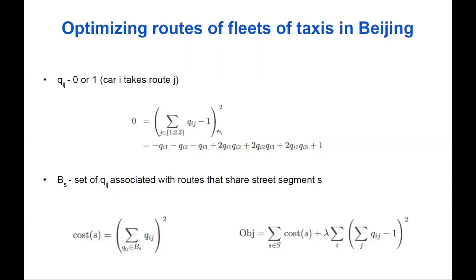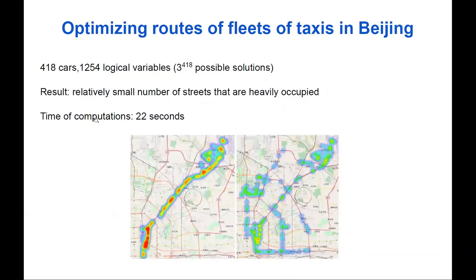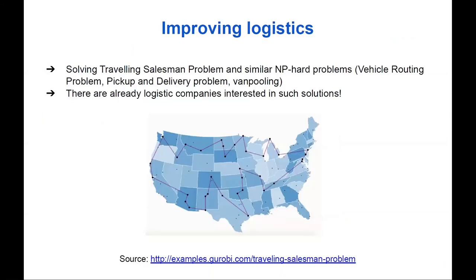This translates directly to the QUBO formulation. The scientists ran experiments on the D-Wave machine and the results were very good. With 418 cars and three times as many logical variables — an astronomical number of possible route combinations — in only 22 seconds they found a route assignment that was relatively good. On the figure, color indicates the density of cars on each road segment: red/orange means more cars and higher travel time in the original routes than in the D-Wave solution. They were able to obtain quite impressive results.